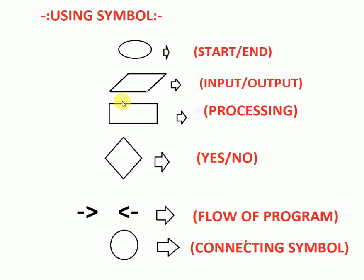For any processing, this processing symbol is used. For example, if you are writing a flowchart for the sum of two numbers, you start, then input two numbers A and B, then sum equals A plus B — that type of calculation goes in the processing symbol. Next, this diamond shape is used for yes or no decisions. When you face two conditions in a program, you use the diamond. It also serves as a connecting node between two symbols.